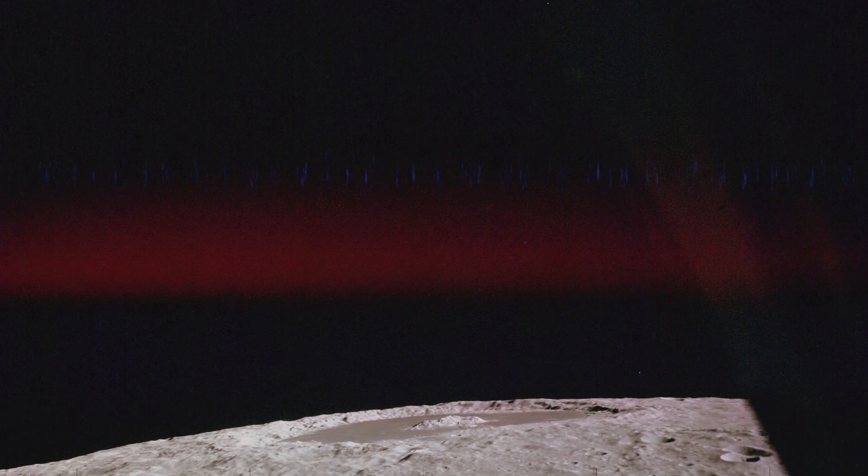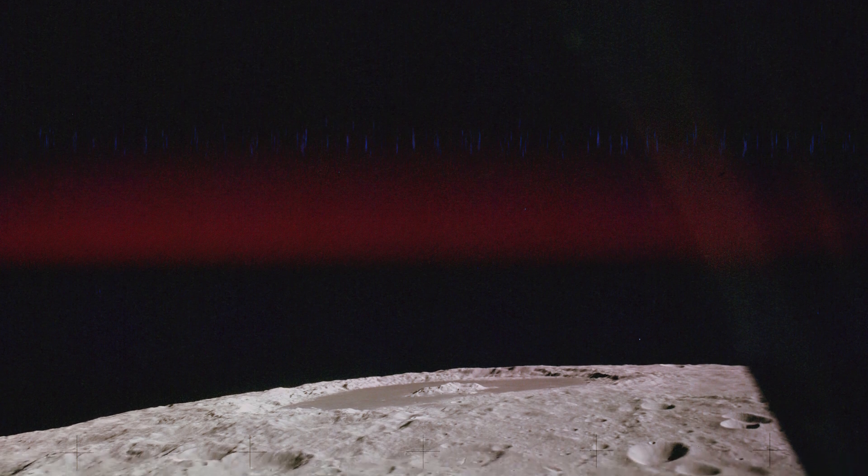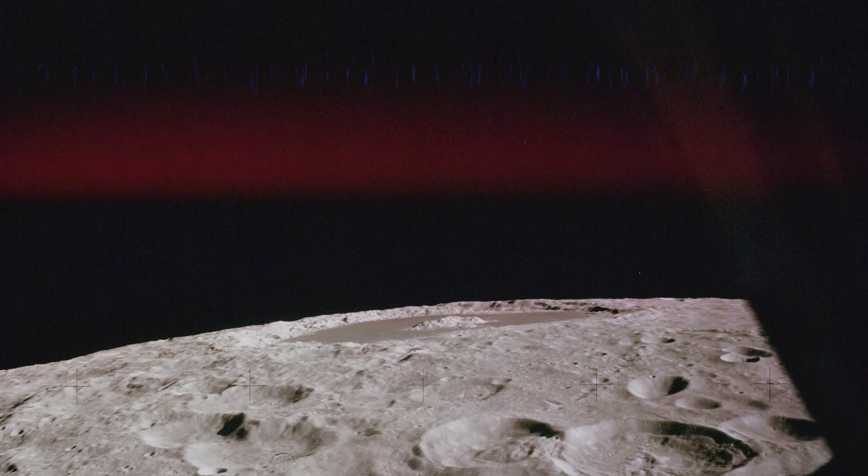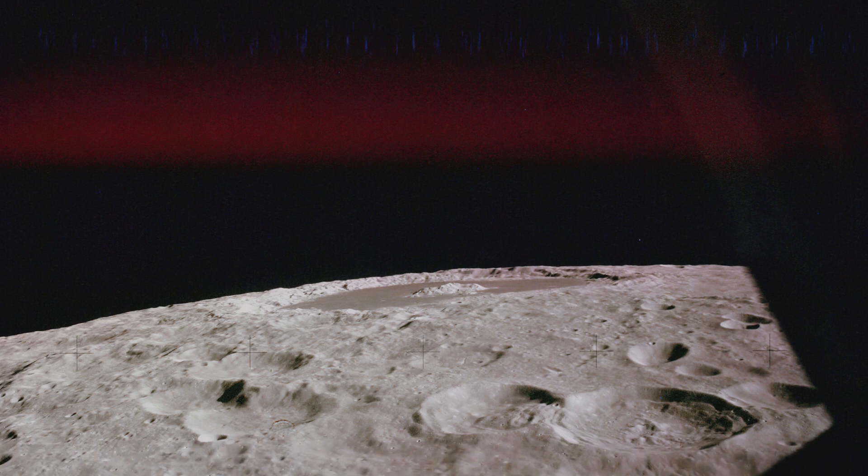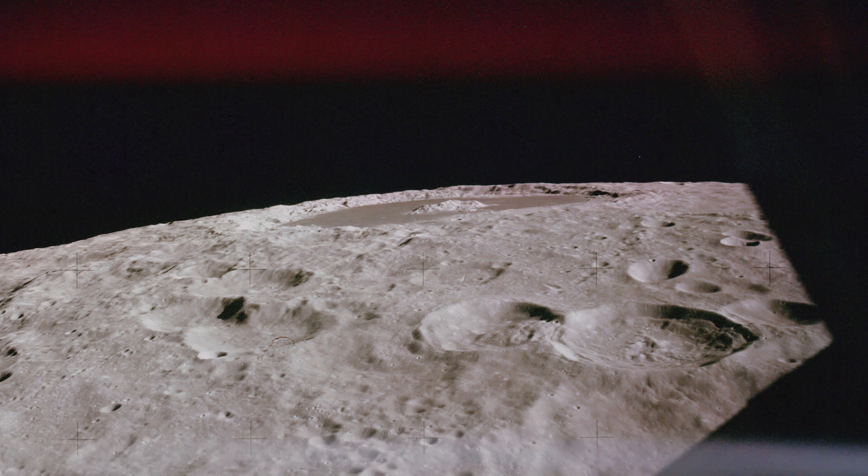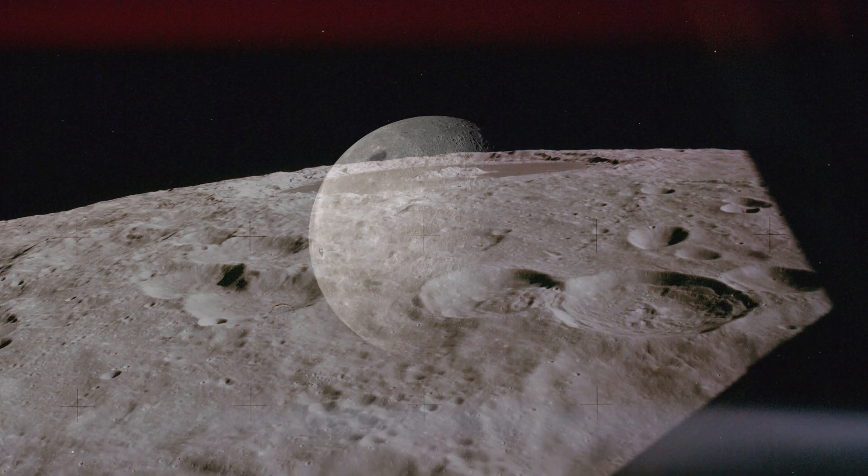The charged particles contained in this sheet bombard the lunar surface and deposit electrons on it. On the near side, these electrons tend to be knocked free again by the strong UV radiation arriving from the sun. However, on the moon's dark side, it's presumed these charges can accumulate up to thousands of volts.